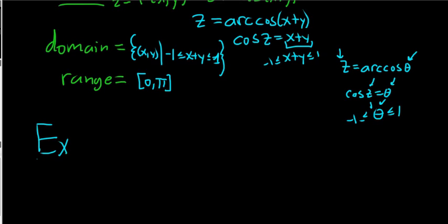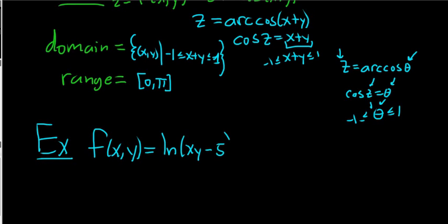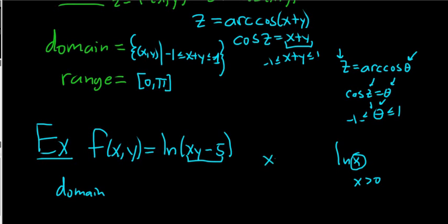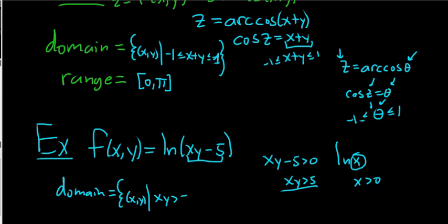Say we have f(x,y) = ln(xy - 5). We're looking for the domain and range. Since you can't take the log of 0 or a negative number, this piece always has to be positive. So we set xy - 5 > 0, which gives us xy > 5. The domain is the set of all ordered pairs (x, y) such that x times y is greater than 5.